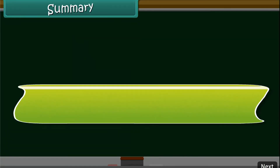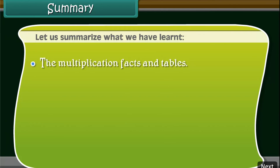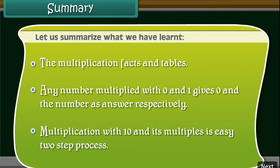Summary. Let us summarize what we have learned: the multiplication facts and tables — any number multiplied by 0 gives 0, and any number multiplied by 1 gives the number itself. Multiplication with multiples of 10 is an easy 2-step process.